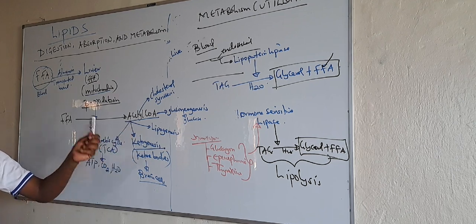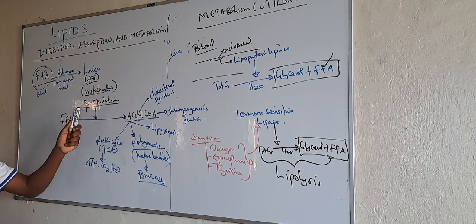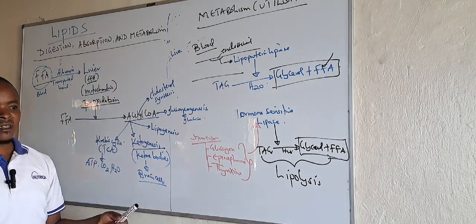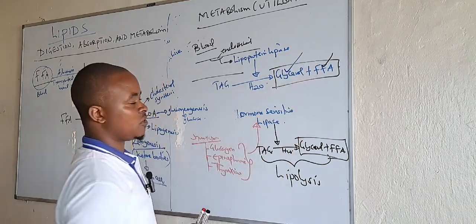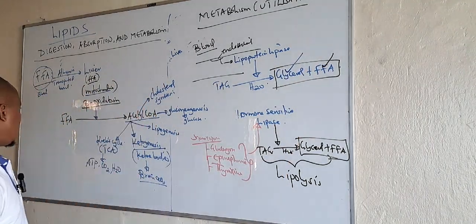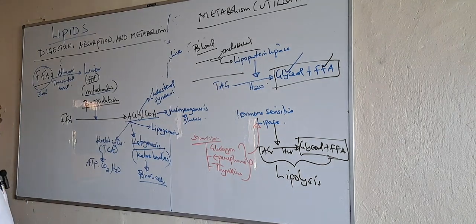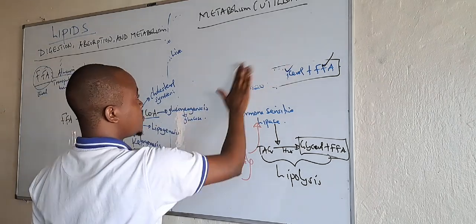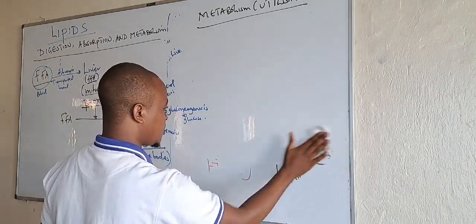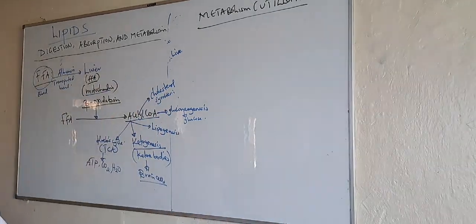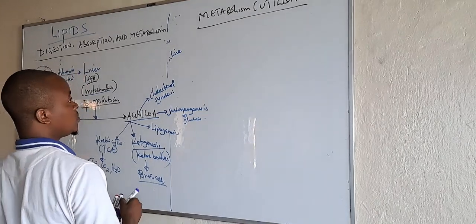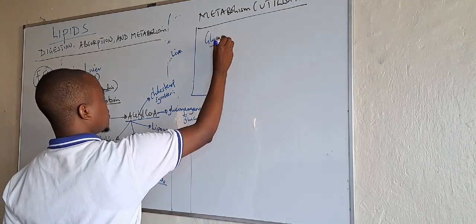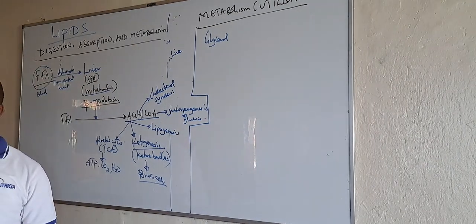So this is the utilization of free fatty acids: after being transported to the liver, within the mitochondria of the liver, free fatty acids undergo beta-oxidation to form acetyl-CoA, which is used in these different ways. Then lastly is glycerol. How does the body utilize glycerol? This glycerol is in the blood circulation, or in the adipose tissue, or in the skeletal muscles.